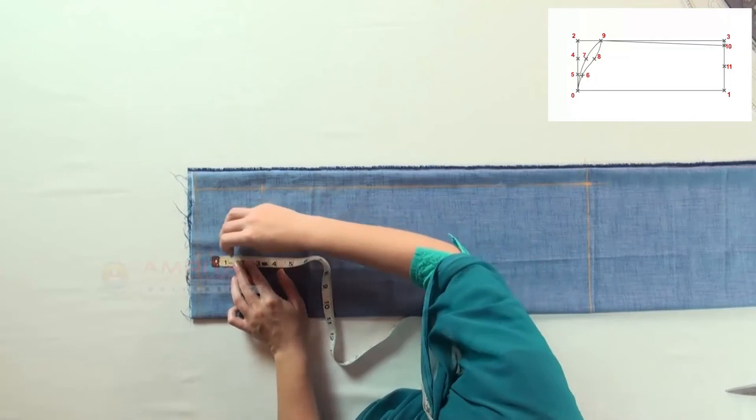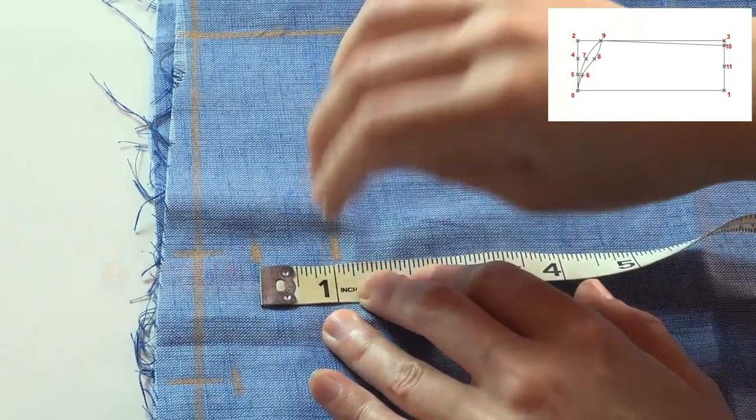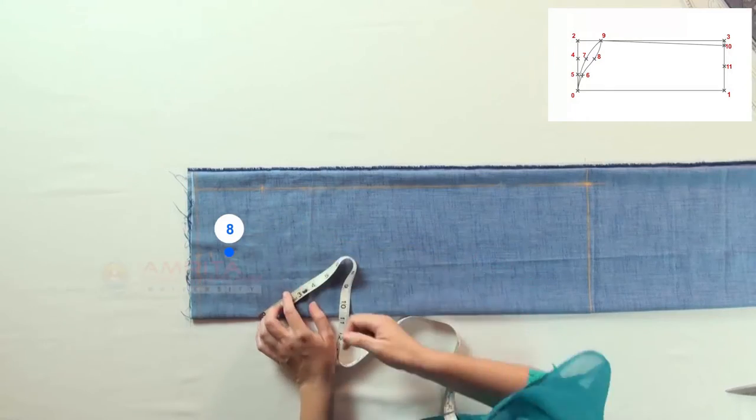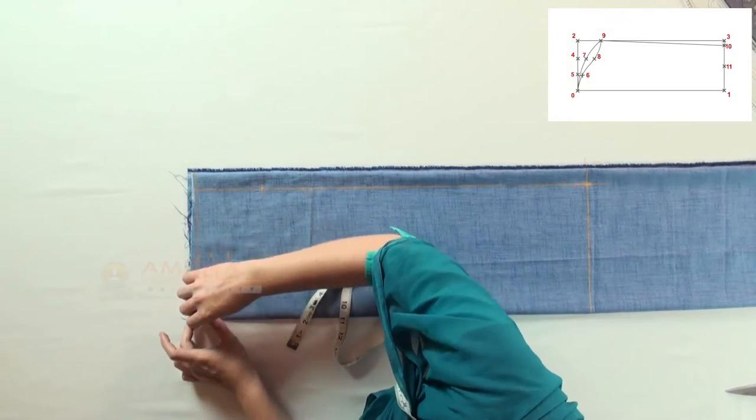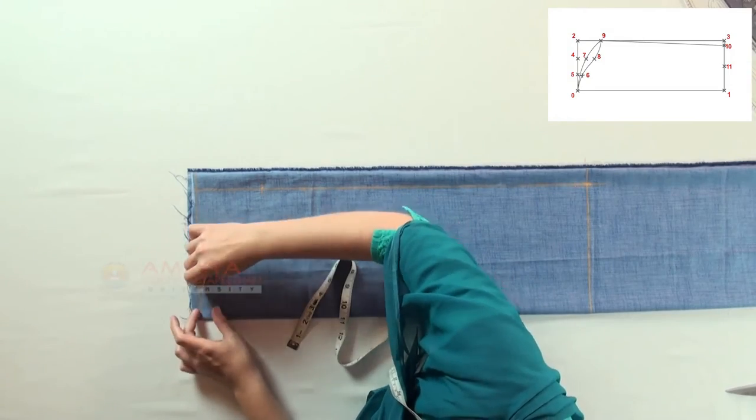And from point seven, measure another one inch downwards and make a mark. This is point eight. Join points zero, seven, nine in a curved shape.